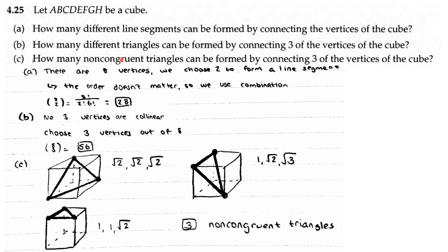Part B: the number of triangles. No 3 vertices are collinear, meaning no 3 vertices lie on the same line. So we can just choose 3 vertices out of the 8 vertices the cube has. 8 choose 3 is equal to 56 different triangles.